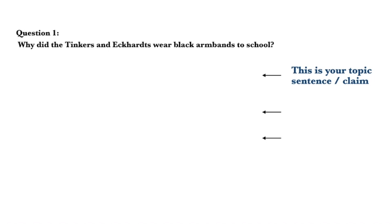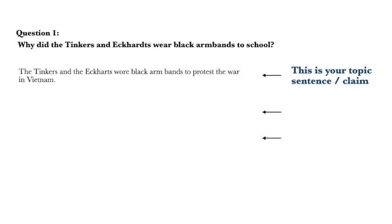Now what we want to do in this short video is answer question one: Why did the Tinkers and the Eckharts wear black armbands to school? The first thing we have to do is create a topic sentence. We want our topic sentence to be short and use the same words as much as possible from the question. So this topic sentence says: the Tinkers and the Eckharts wore black armbands to protest the war in Vietnam.